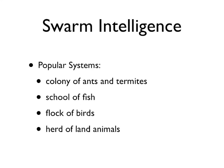Examples of systems studied by Swarm Intelligence are colonies of ants and termites, schools of fish, flocks of birds, and herds of land animals. Some human artifacts also fall into the domain of Swarm Intelligence, notably some multi-robot systems and also certain computer programs that are written to tackle optimization and data analysis problems.